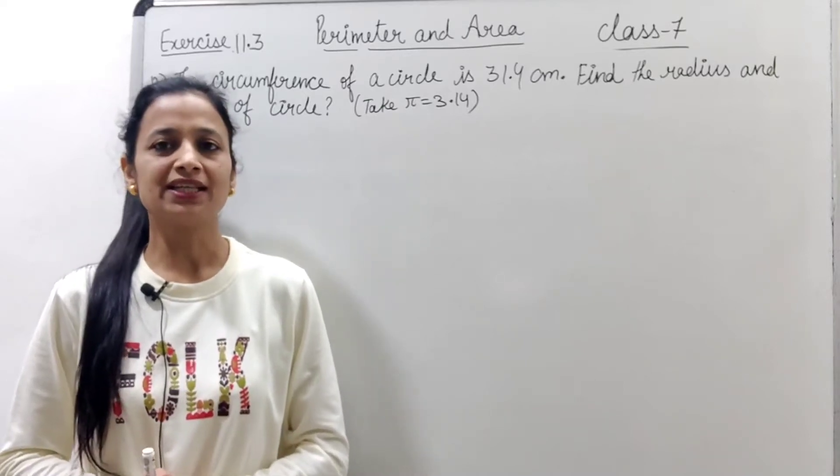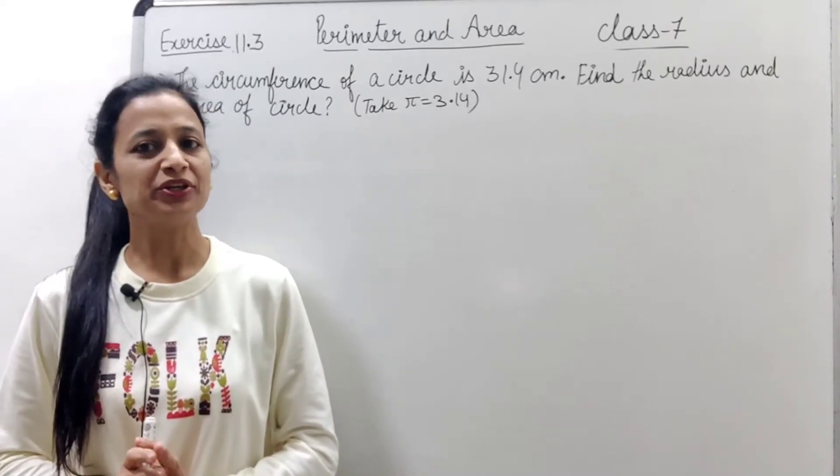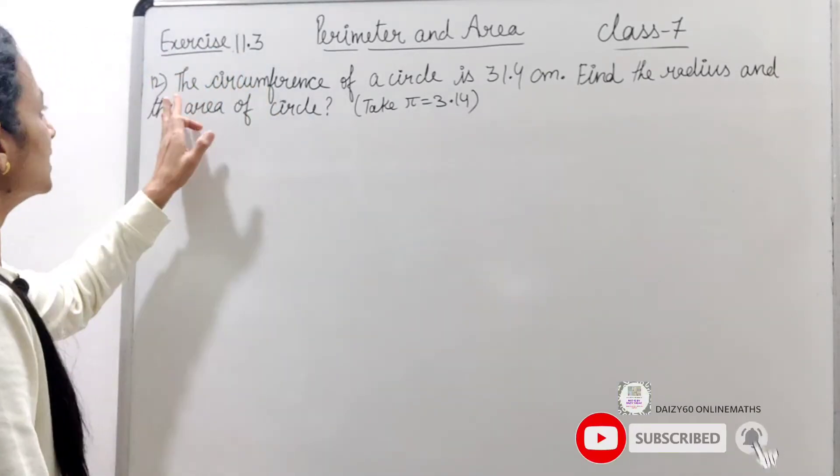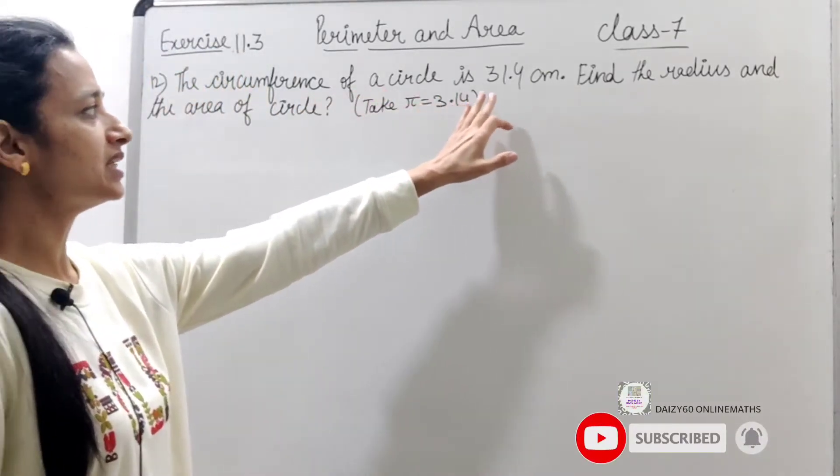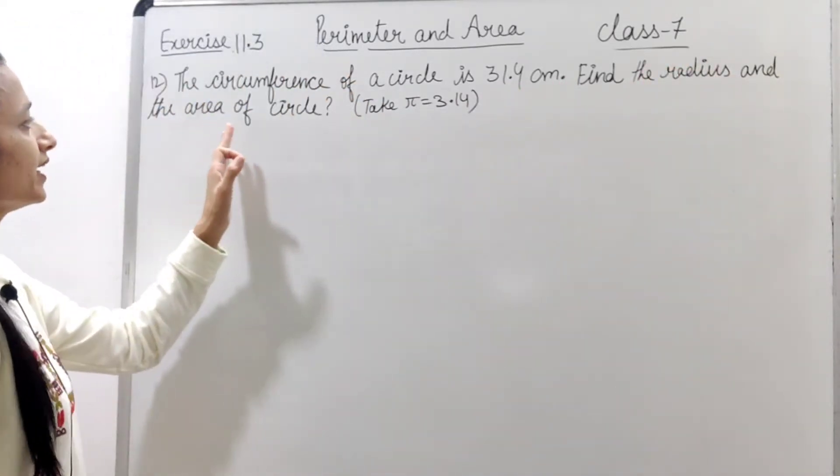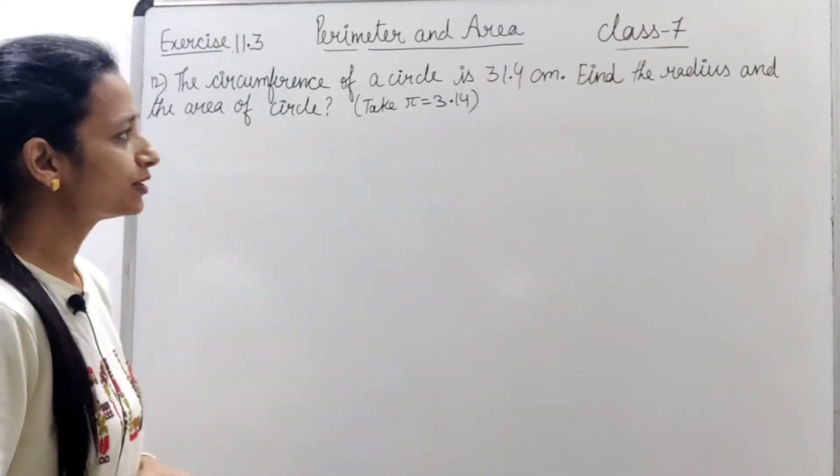Hello everyone, my name is Desi and in this video I am going to explain question number 12 of exercise 11.3. The question is: The circumference of a circle is 31.4 cm. Find the radius and the area of the circle.